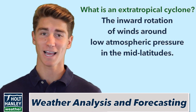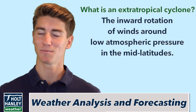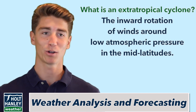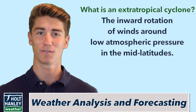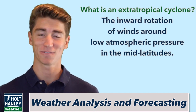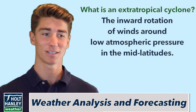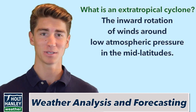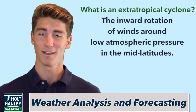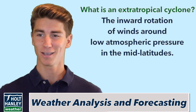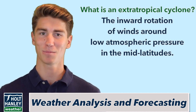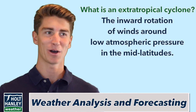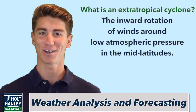Now for the cyclone part, a cyclone is basically the inward motion of winds around a low atmospheric pressure. In the northern hemisphere, these winds spin counterclockwise, and in the southern hemisphere, they spin clockwise. The reason the rotations are different depending on the hemisphere has to do with the Coriolis force, but we'll get into that in another episode.